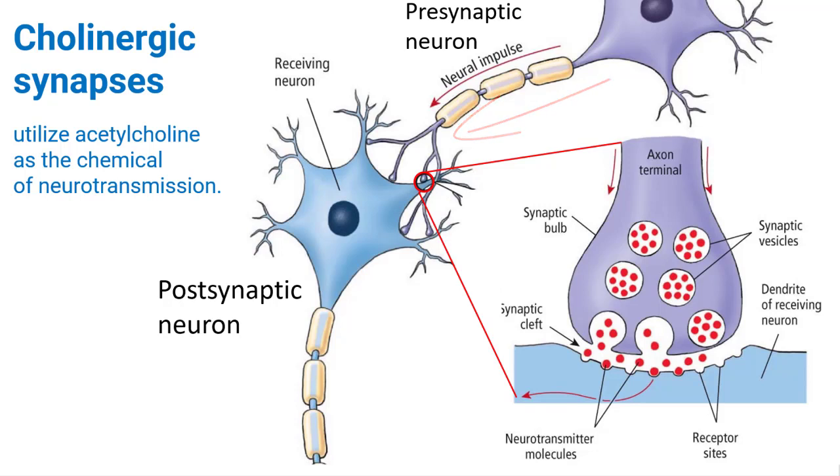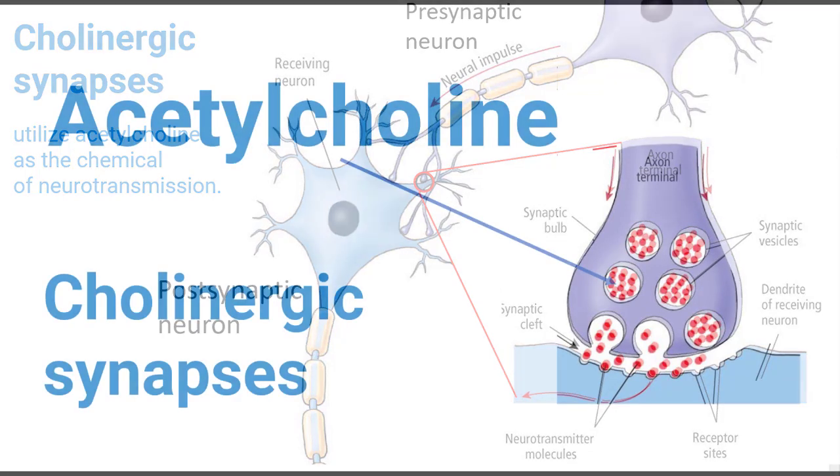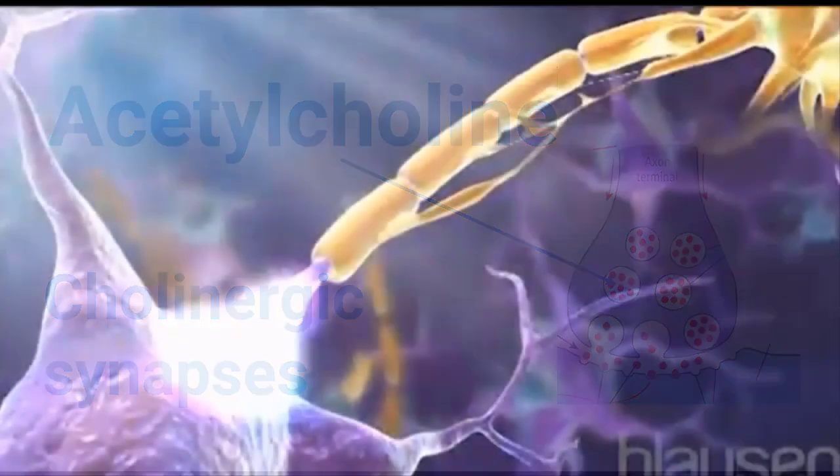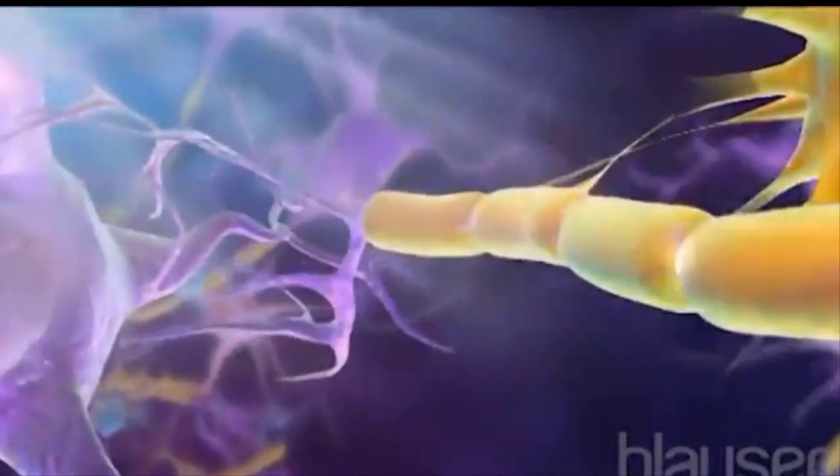At the synapse, this pulse is transmitted to the proximate neuron by chemicals called neurotransmitters. We will study the neurotransmitter called acetylcholine. This type of synapse is called a cholinergic synapse. How do neurons transmit information to each other?